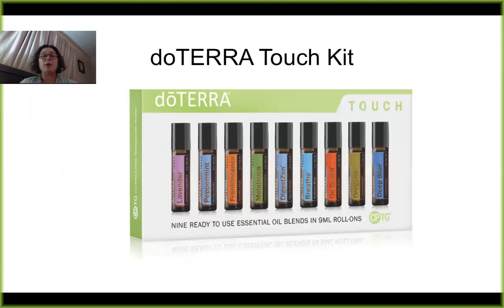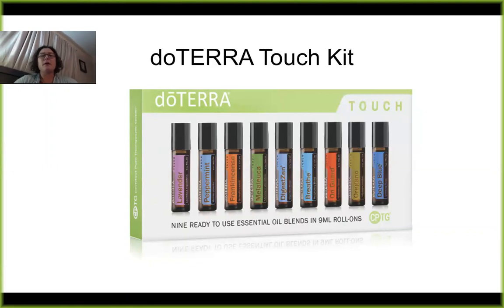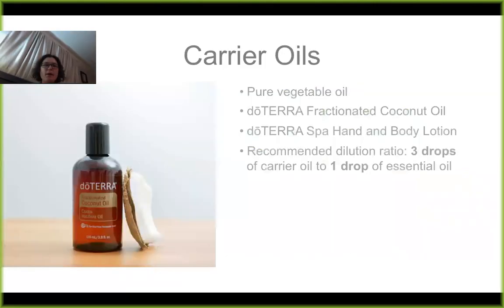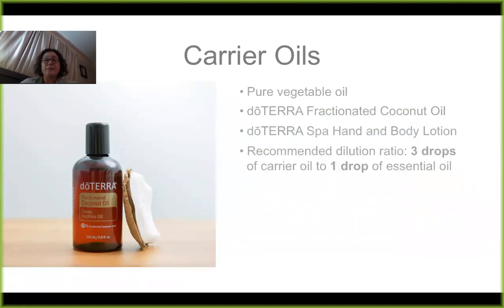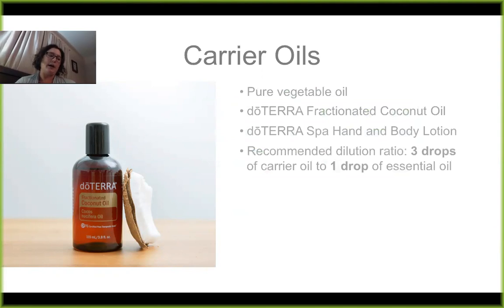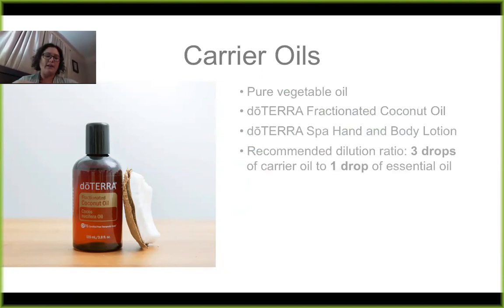We also have our emotions line in pre-diluted rollers — our emotional aromatherapy oils — and some other oils as well that are already pre-diluted for us. When we talk about carrier oils, we're really just talking about a base oil, typically some sort of pure vegetable oil. We call it a carrier oil because it helps carry the essential oil into the desired area on the skin or body, and it really helps to increase absorption into the skin. It doesn't detract from the efficacy of the oils at all — a carrier oil actually helps to drive it in a little bit more.